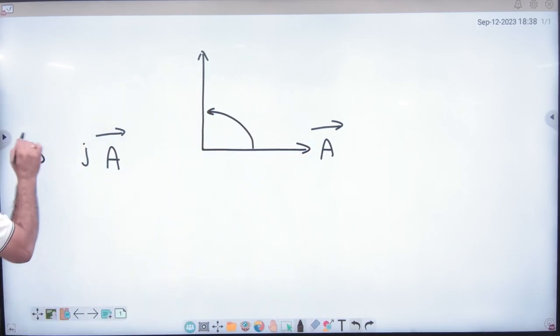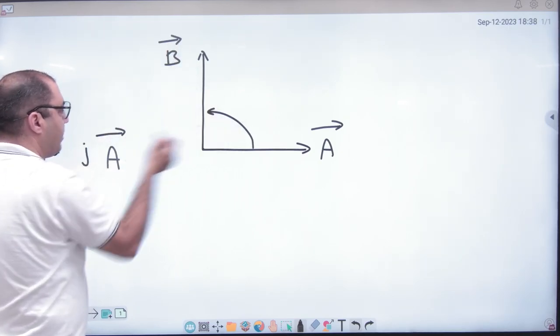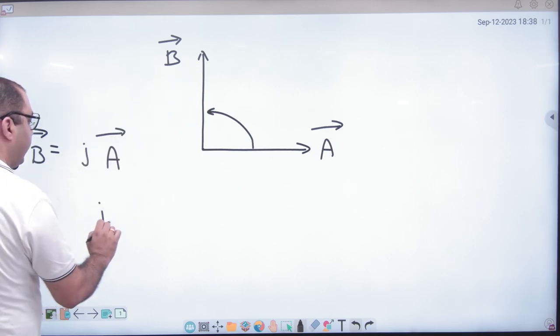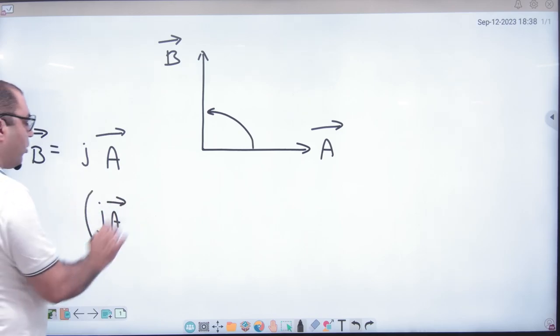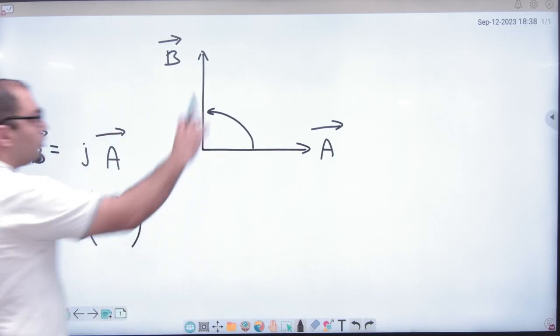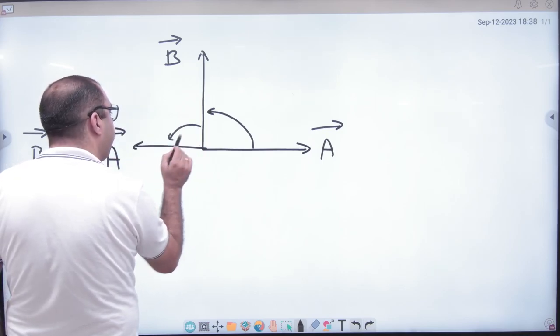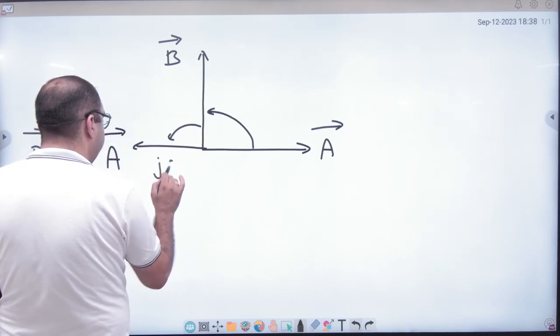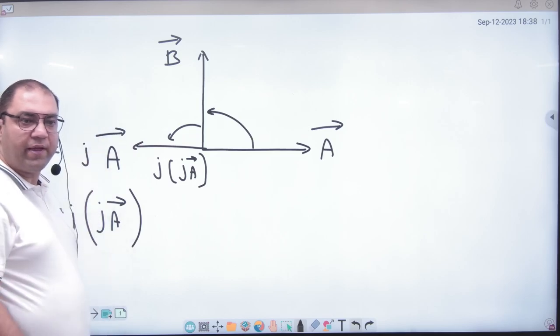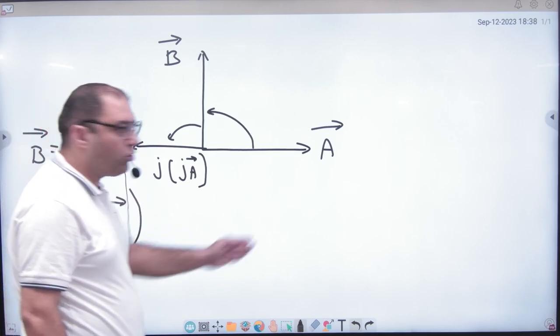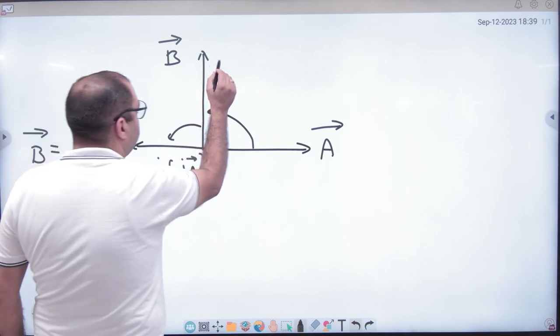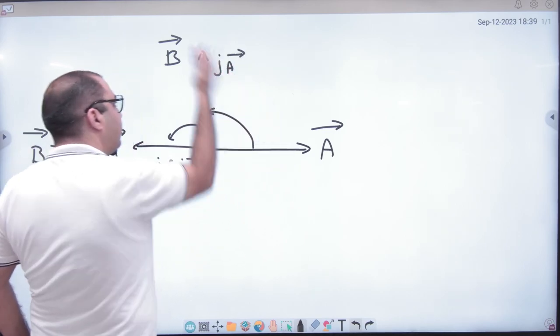So this new vector is jA. It is 90 degrees from A vector. Now here, if I multiply by J again, what happens? J times J times A vector. If you keep multiplying by J, it keeps rotating by 90 degrees. So if I write J times A vector, it means A vector is 90 degrees ahead. If I write J squared, it's 180 degrees ahead from the start.